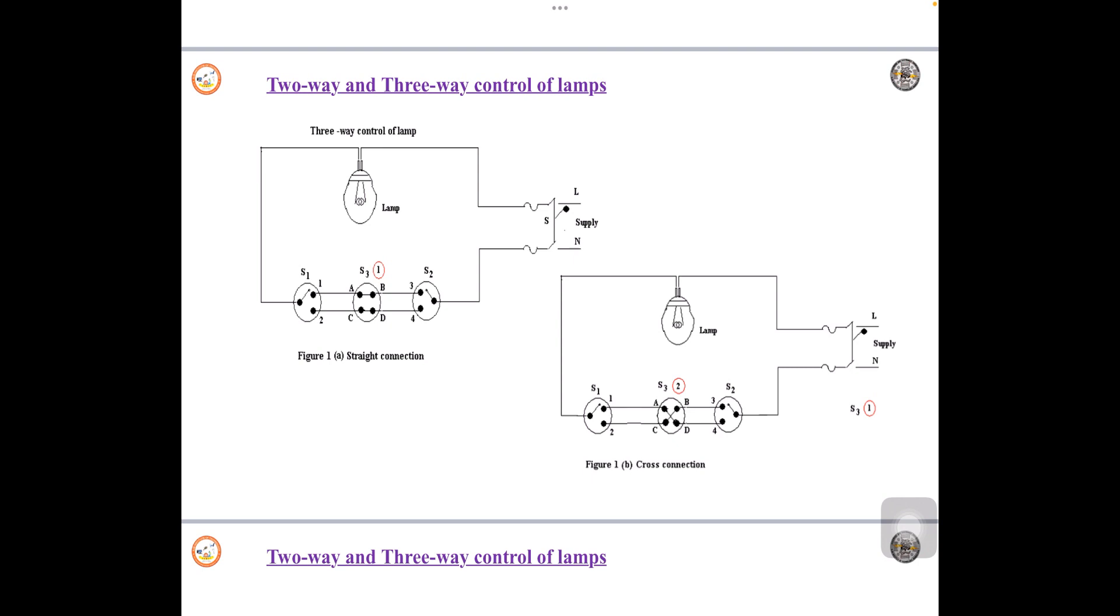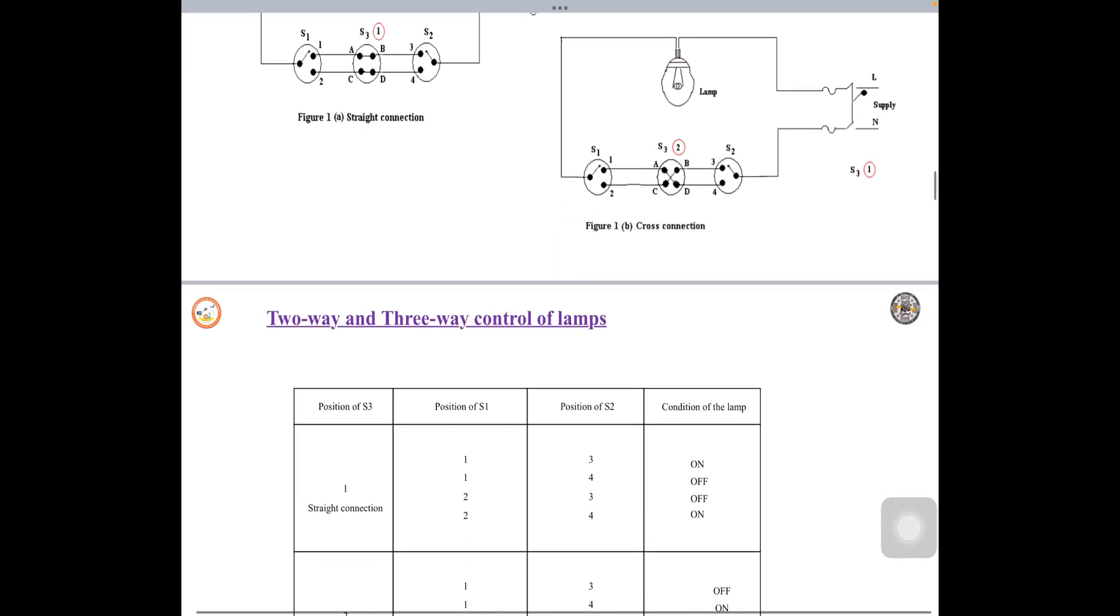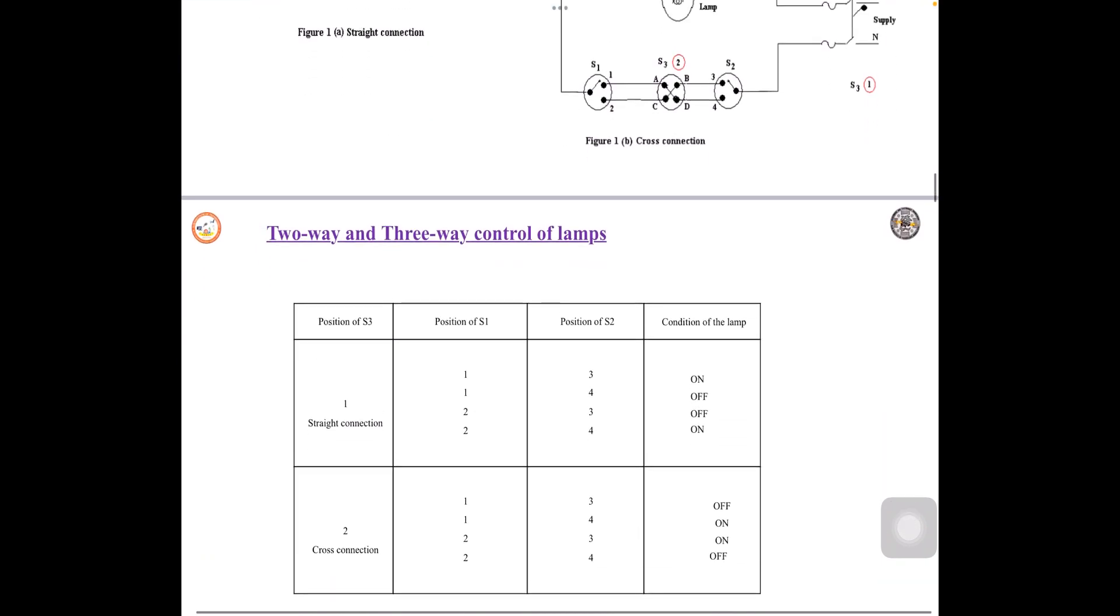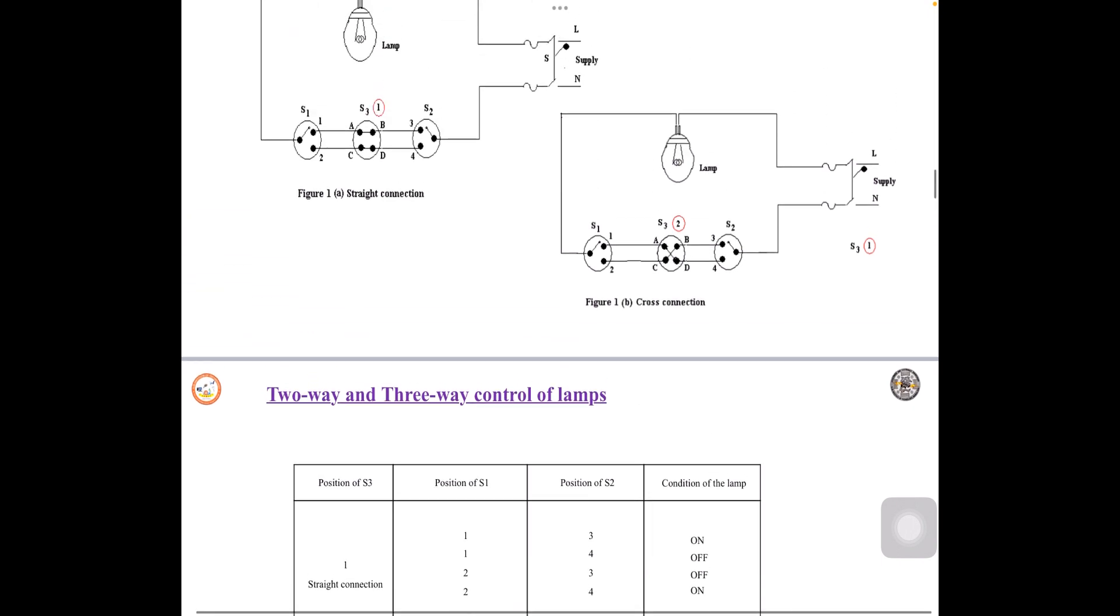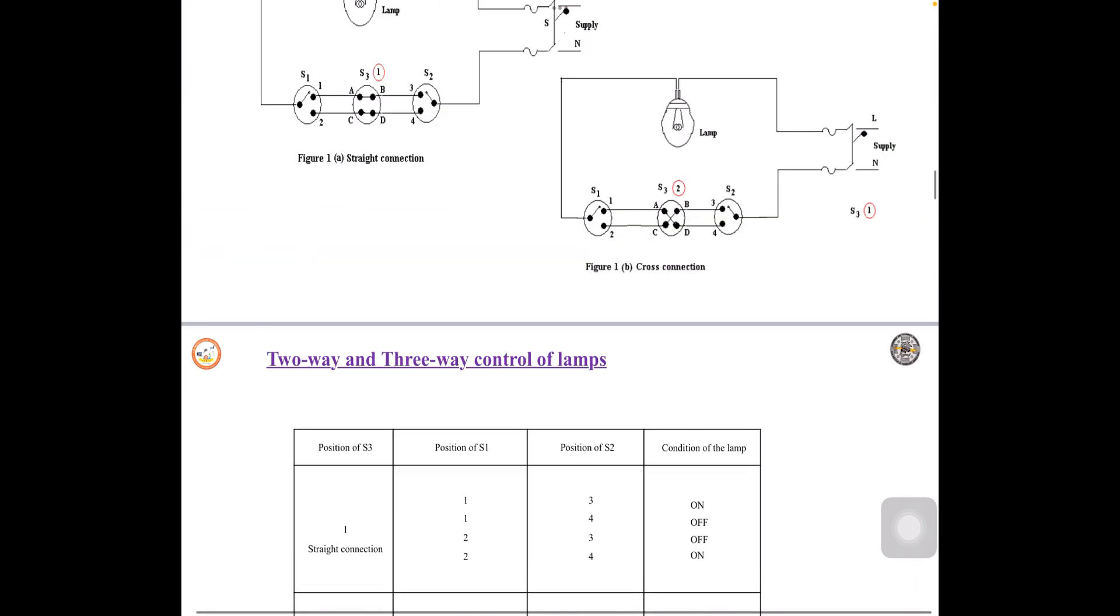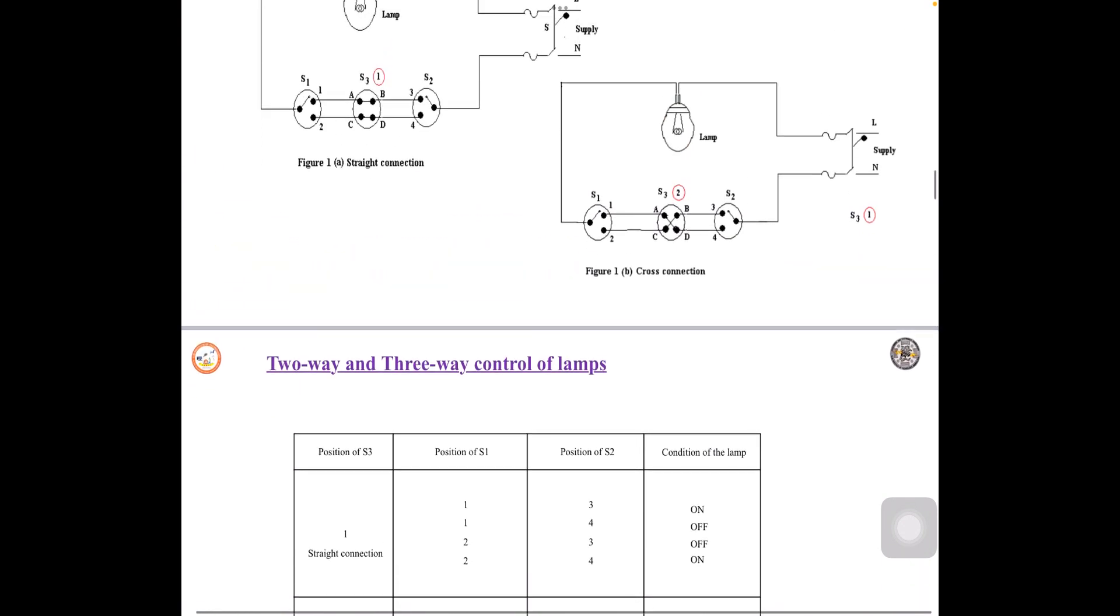Now how this operates? Now how many possible operation of the lamps here? There are eight possibilities of the lamps. So we have divided that into two parts. One is straight connection as you can observe in figure 1-A and one more is cross connection, that is the intermediate switch position is changed.